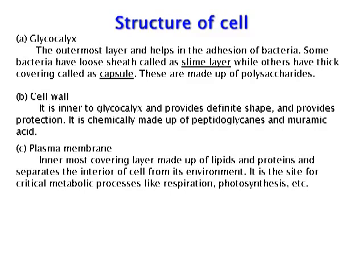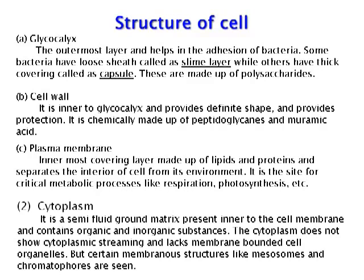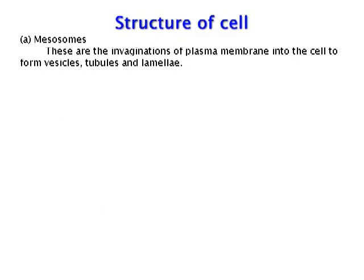Plasma membrane is the innermost covering layer, made up of lipids and proteins, and separates the interior of the cell from its environment. It is a site for critical metabolic processes like respiration and photosynthesis. Cytoplasm is a semi-fluid ground matrix present inner to the cell membrane and contains organic and inorganic substances. The cytoplasm does not show cytoplasmic streaming and lacks membrane-bounded cell organelles, but certain membranous structures like mesosomes are seen. Mesosomes are invaginations of the plasma membrane into the cell forming vesicles, tubules, and lamellae.